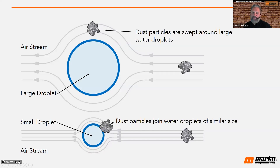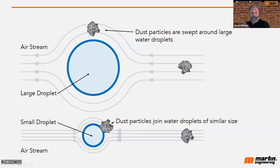So the droplet size, which is affected by the surfactant as well as the nozzle configuration, really causes that water droplet to be smaller, which lets it connect or attach to that dust particle. And that's what increases its cohesiveness and its weight.